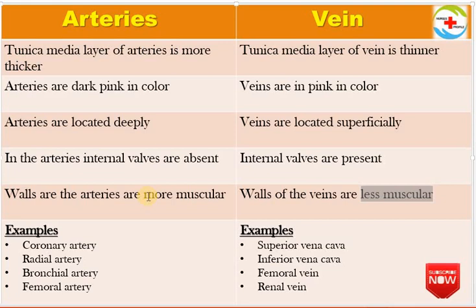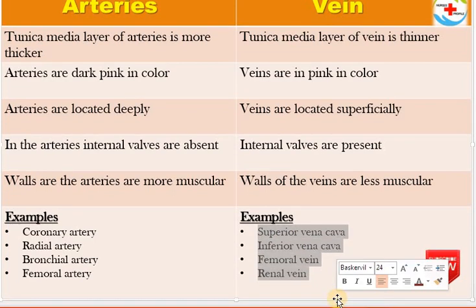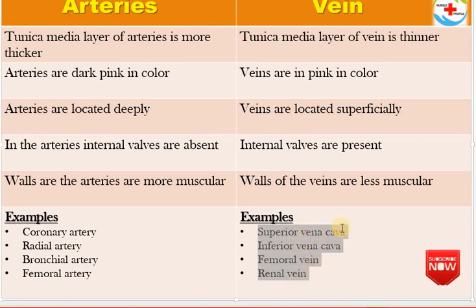Examples of arteries include the coronary artery, radial artery, bronchial artery, and femoral artery. Examples of veins include the superior vena cava, inferior vena cava, femoral vein, and renal vein.